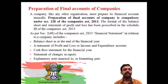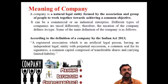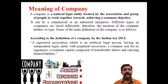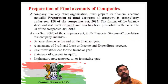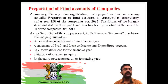To conclude: a company is like an artificial person created under the law with perpetual succession and a common seal. The Indian Companies Act defines a company with perpetual succession, common seal, transferable shares, and limited liability. Final accounts of a company means the balance sheet and profit and loss account. As per Section 128, final accounts include the balance sheet, statement of profit and loss, cash flow statement, statement of changes in equity, and explanatory notes.